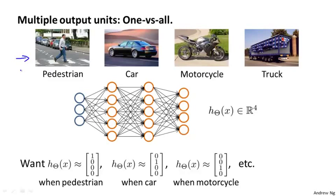If that's the case, what we would do is we would build a neural network with four output units, so that our neural network now outputs a vector of four numbers. And what we're going to try to do is get the first output unit to classify: is the image a pedestrian, yes or no? The second unit to classify: is the image a car, yes or no? This unit to classify: is the image a motorcycle, yes or no? And this to classify: is the image a truck, yes or no?